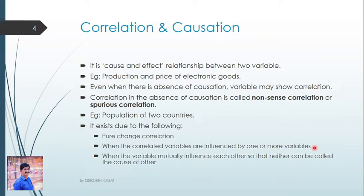Two variables may also be correlated because they are influenced by one or more other variables. A high degree of correlation between two variables may exist when the same cause is affecting each variable, or different causes are affecting each variable with the same effect. For example, yield per acre of rice or tea may be correlated due to the fact that both are related to the amount of rainfall, but neither of the two variables is the cause of the other.